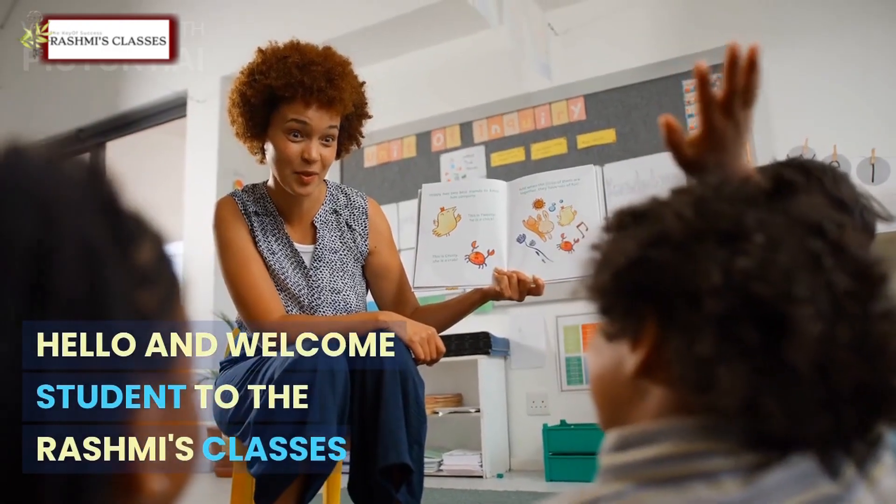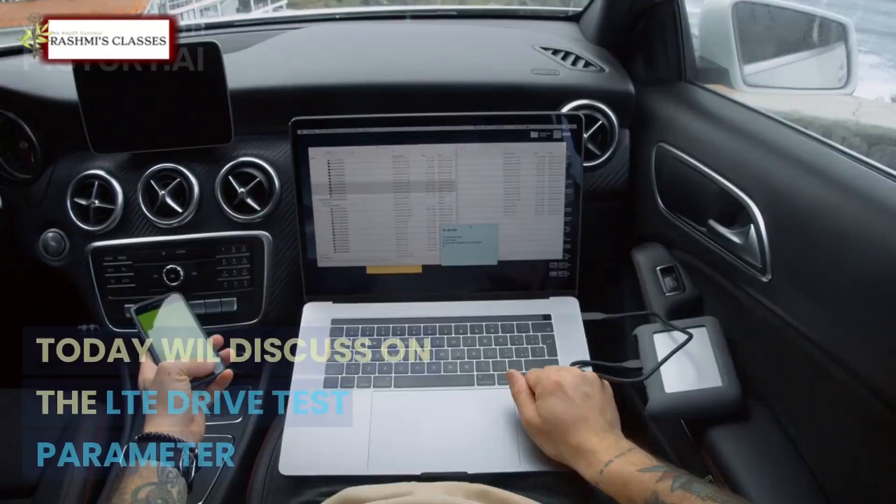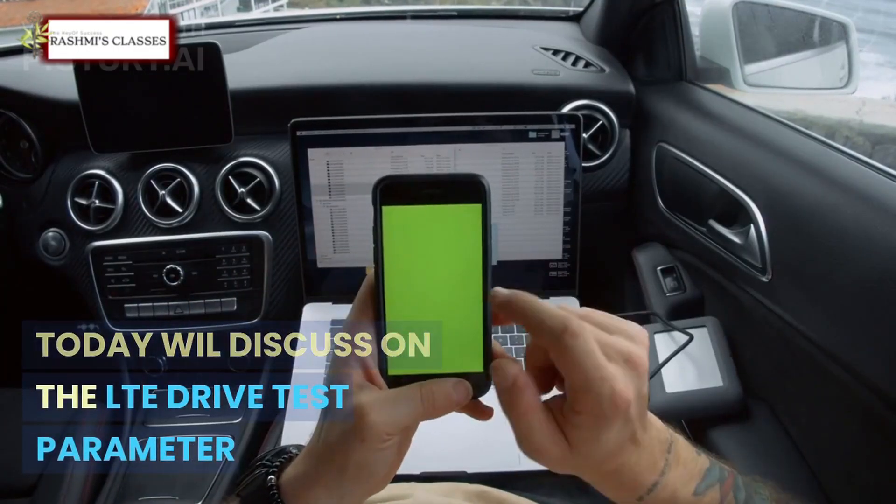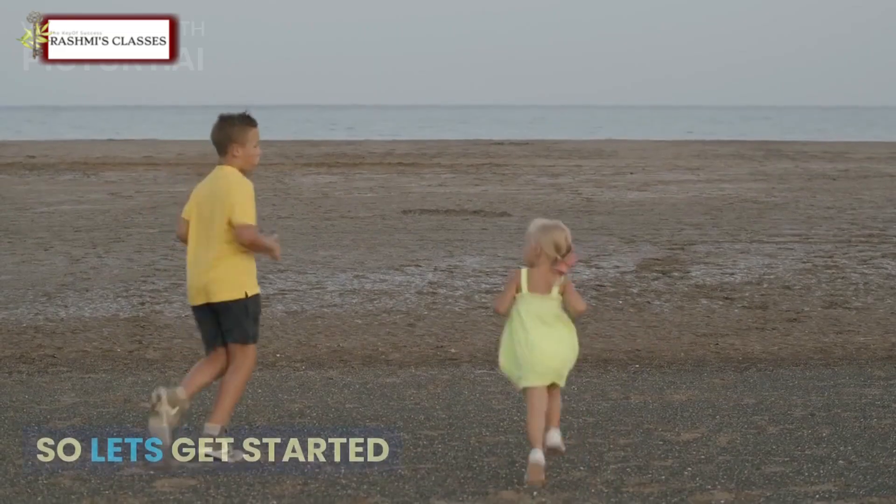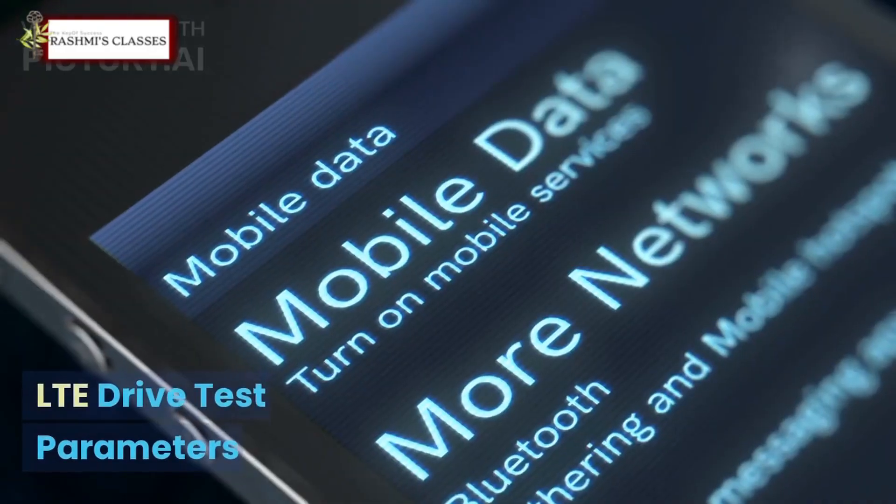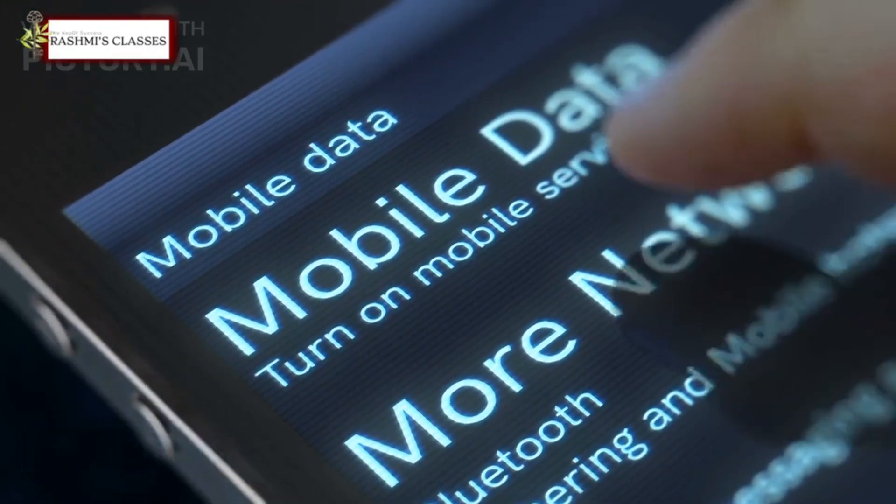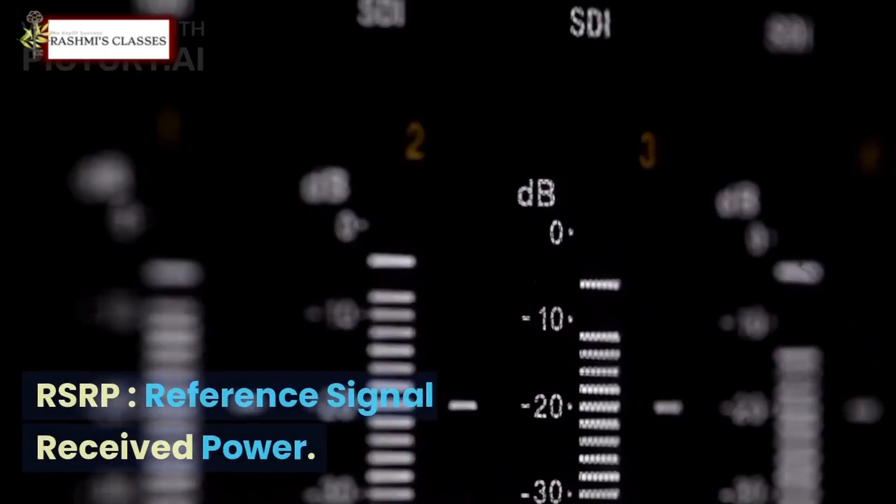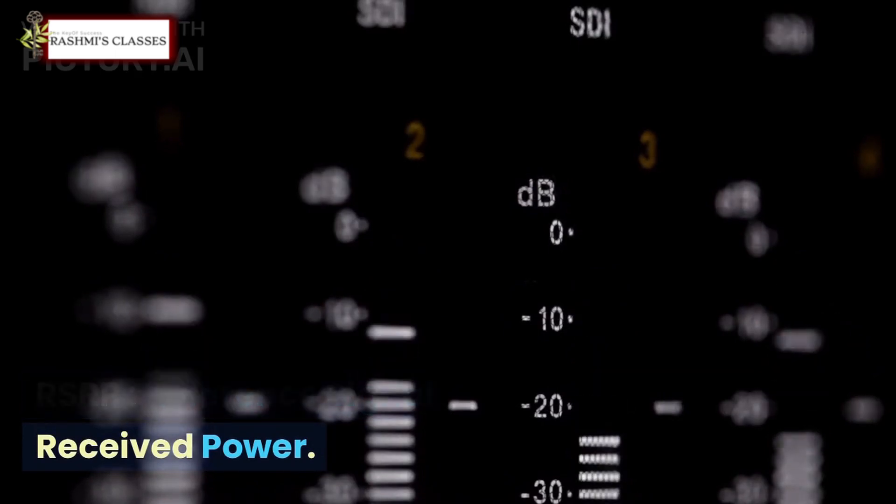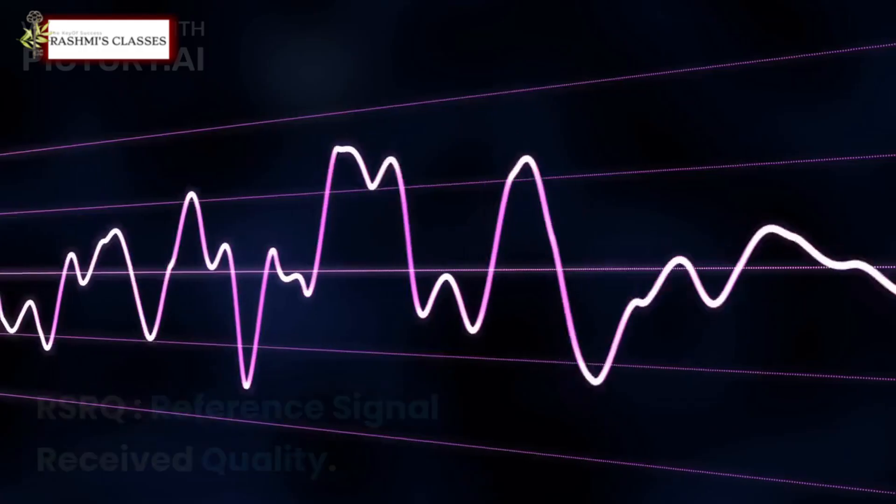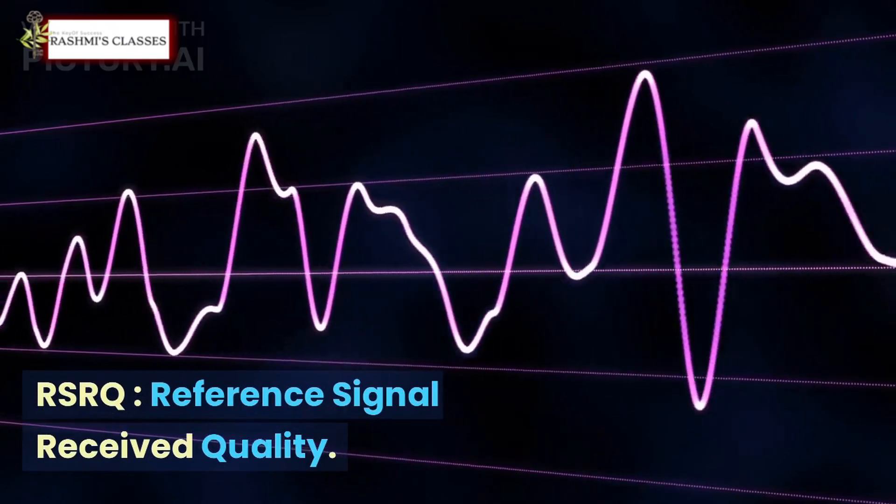Hello and welcome to Rashmi's Classes. Today we'll discuss LTE drive test parameters. Let's get started. LTE drive test parameters: 1. RSRP - Reference Signal Received Power, 2. RSRQ - Reference Signal Received Quality, 3. RSSI - Received Signal Strength Indicator.